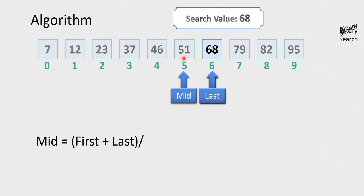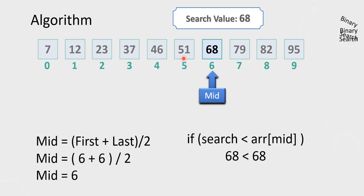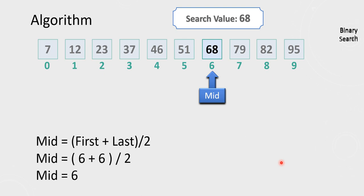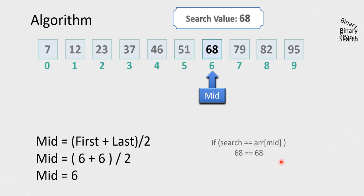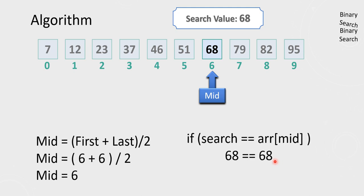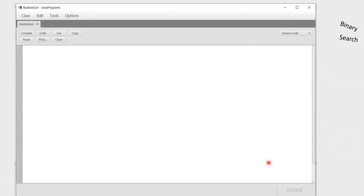Now first, last, and mid all point to position 6. Check the first condition: is 68 less than arr[6]? 68 is not less than 68 — false. Check the second condition: is 68 greater than 68? No — false again. Now the third important condition: is the search value equal to arr[mid]? Is 68 equal to 68? Yes, we found the match. The loop terminates. This is how the binary search algorithm works.